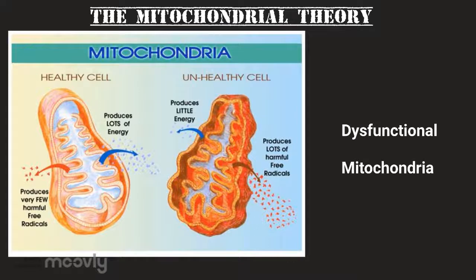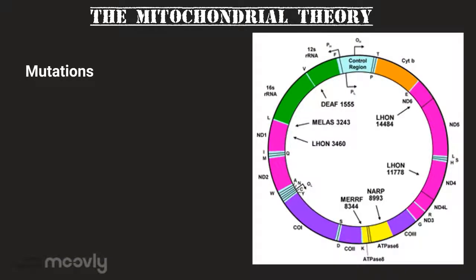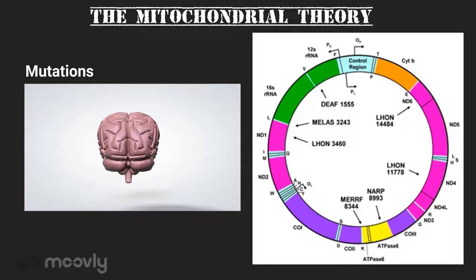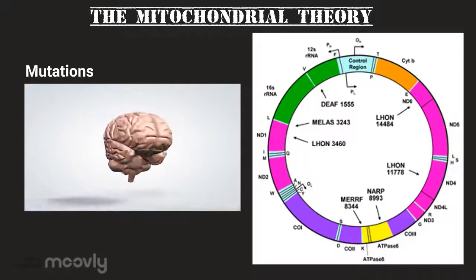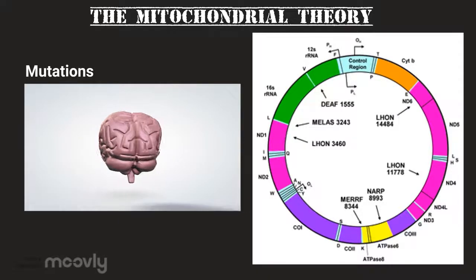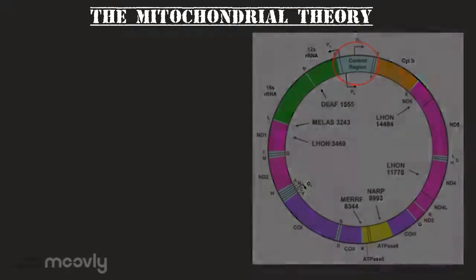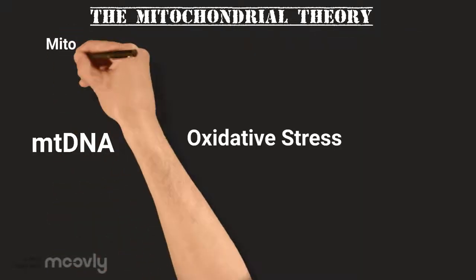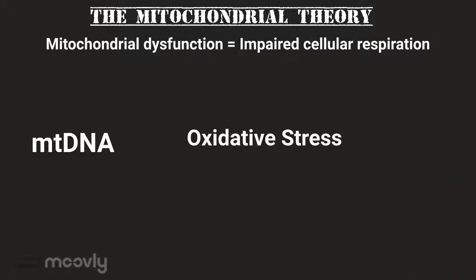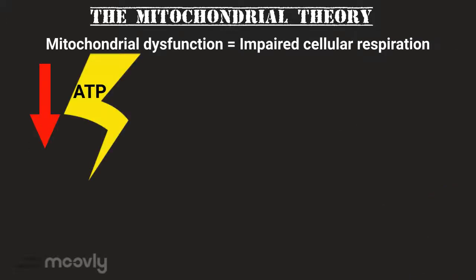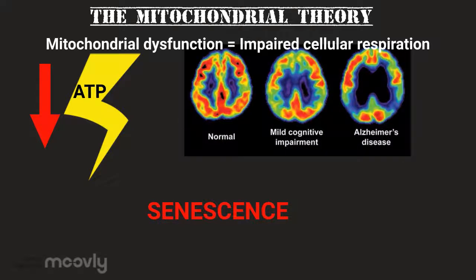ROS especially damages mitochondrial DNA. Mutations like deletions and point mutations in mitochondrial DNA are part of the aging process in postmitotic organs and tissues like the brain. These mutations occur at higher levels in aged individuals, especially in the control region responsible for mitochondrial DNA transcription and replication. The mitochondrial DNA defects due to oxidative stress impair cellular respiration, which reduces cellular energy output. The bioenergetic decline leads to cellular senescence, aging, and degenerative diseases like Alzheimer's and Parkinsonism.